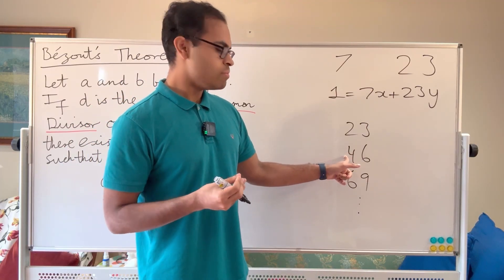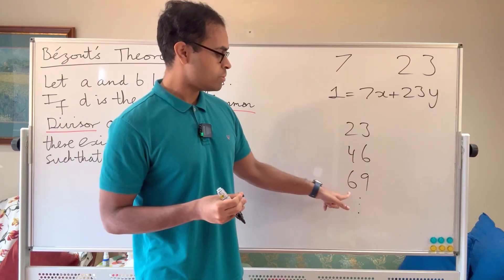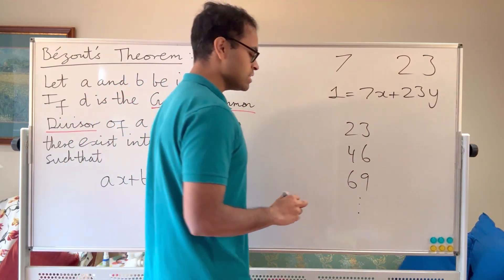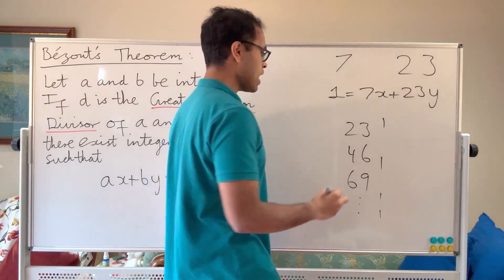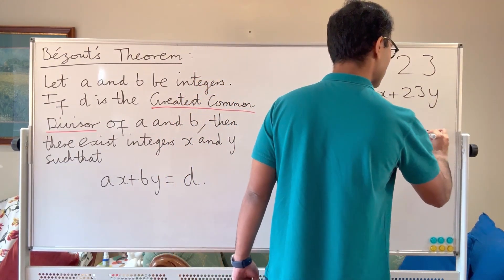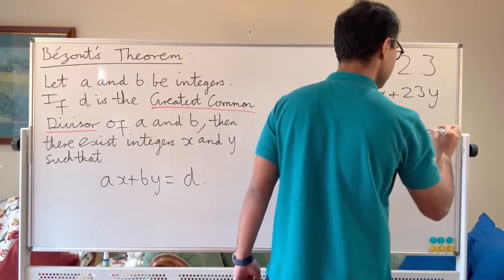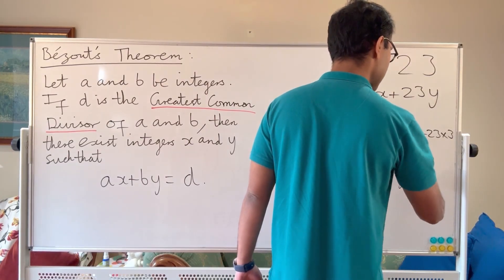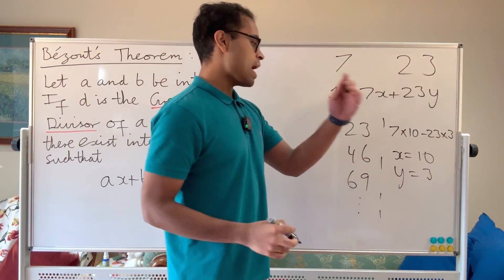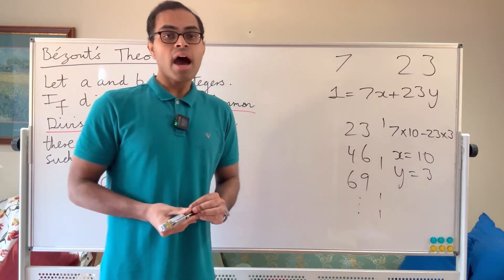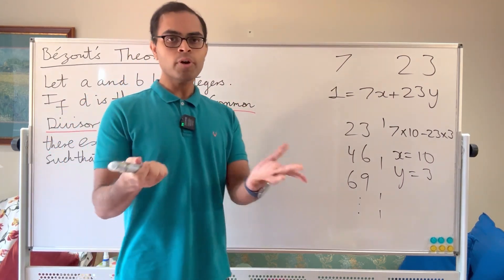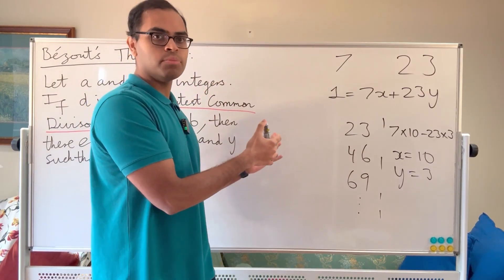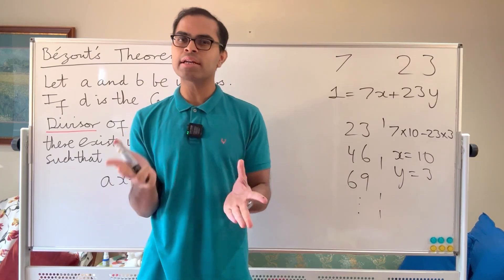46 is also 3 away from 49, so it's not 1 apart from a multiple of 7. But 69 is, because 69 plus 1 is 70. So we can write it as 7 times 10 minus 23 times 3, which is 70 minus 69 equals 1. So x equals 10 and y equals negative 3. There are other possibilities for x and y — drop a comment below and try to explain what all the possible x's and y's are.